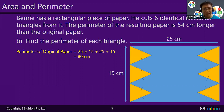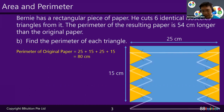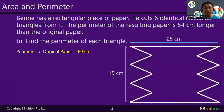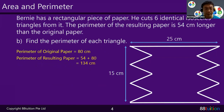After cutting out the six identical isosceles triangles, the white-colored outline — the perimeter of the resulting paper — is 54 cm longer than the original paper. So: 54 plus 80 equals 134 cm. The perimeter of the resulting white-color outline is 134 cm.